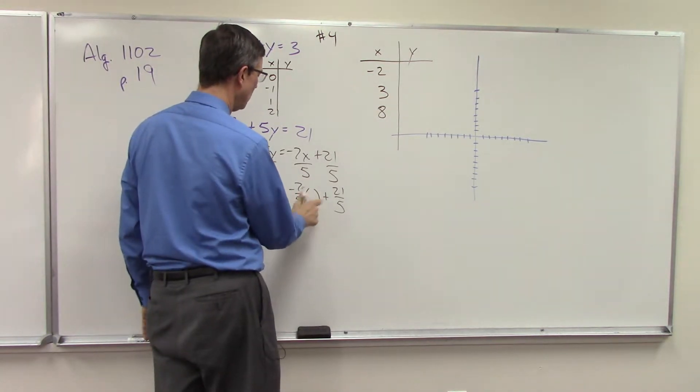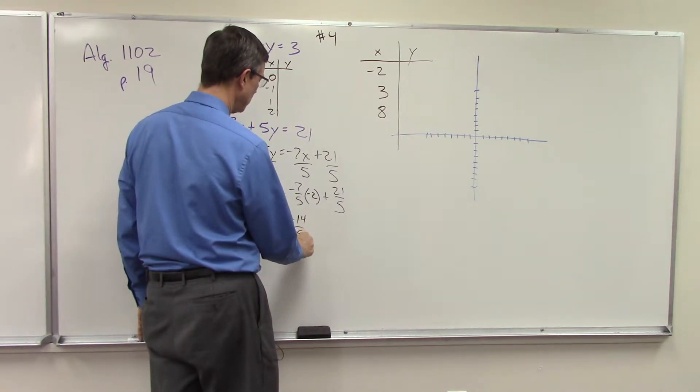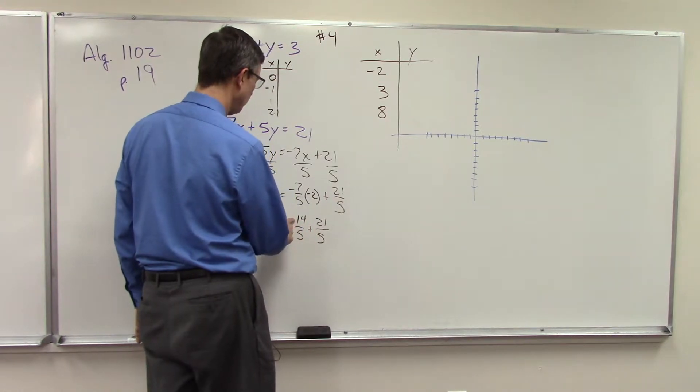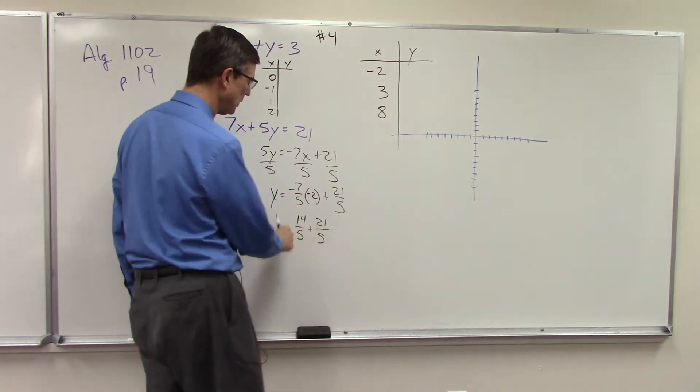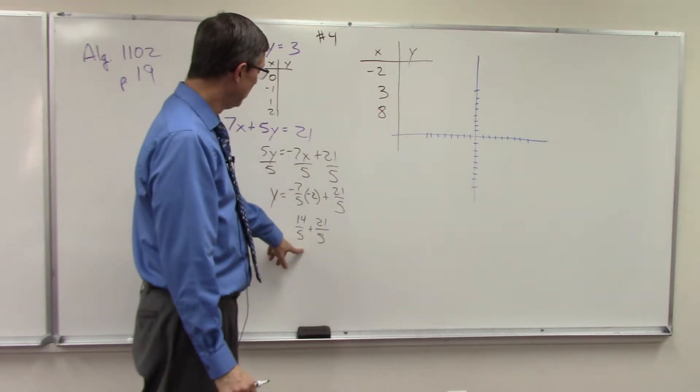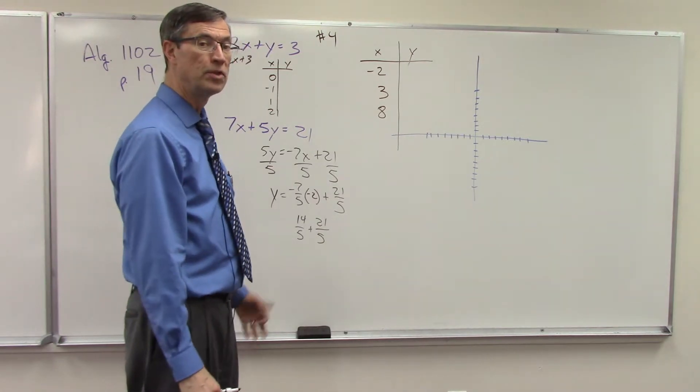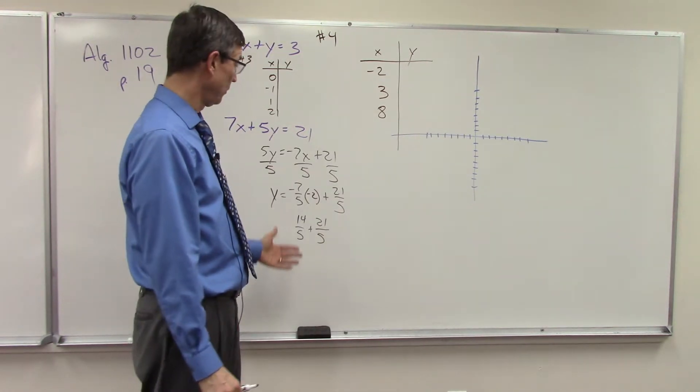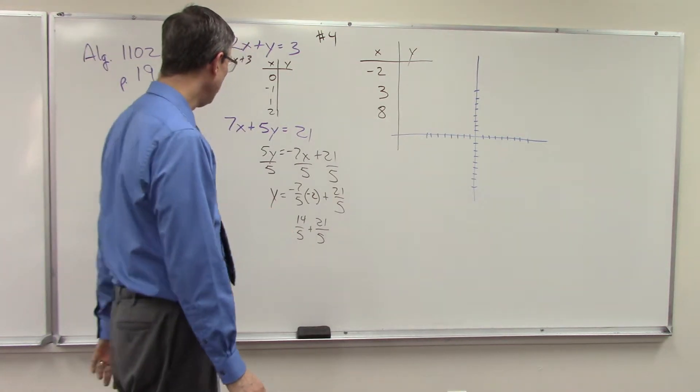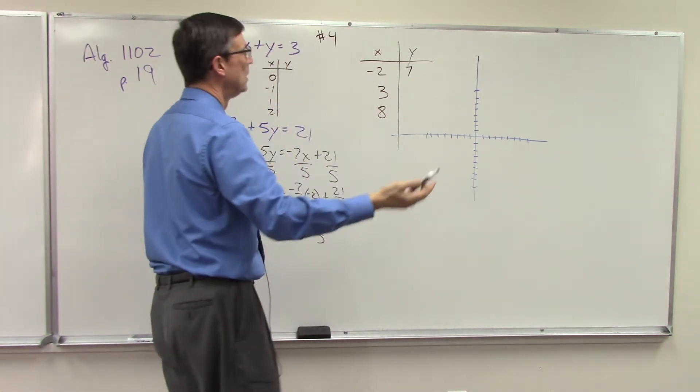So let's plug in, for instance, negative 2 here and see what happens. So that would give me negative 14 fifths plus 21 fifths. Actually, that would be positive 14 because negative times negative makes that a positive. But they have a common denominator of 5, so now I can add 14 plus 21 would be 35. So 35 over 5 is 7.